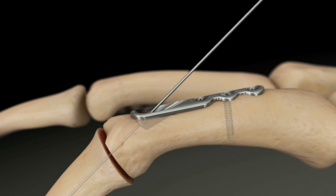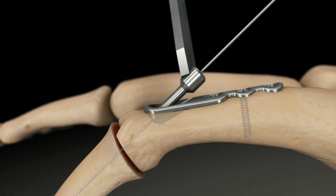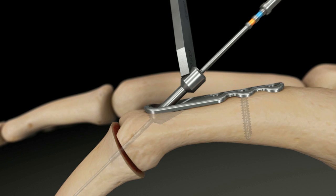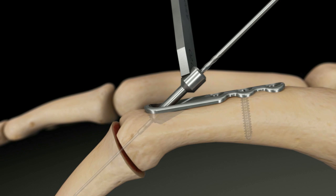For dense bone, drill over the K-wire through the transfix hole. Use a drill guide to protect the plate and ensure the ability to lock the screw.